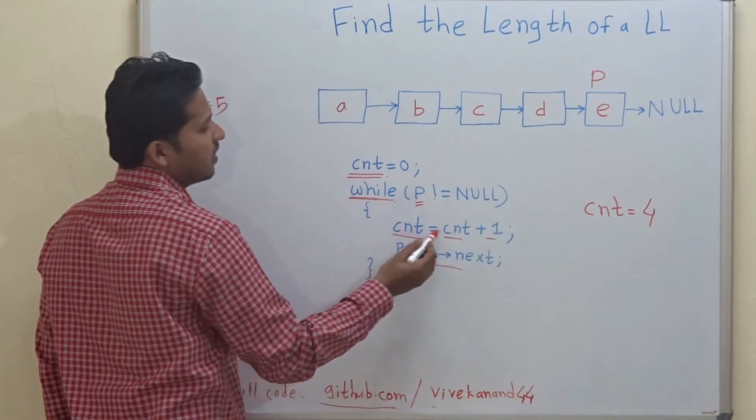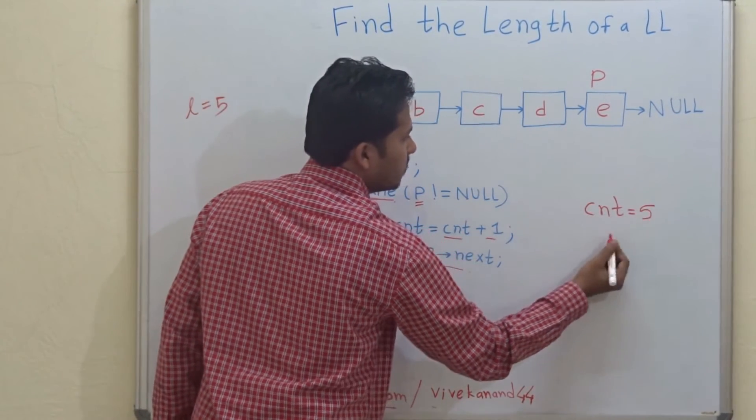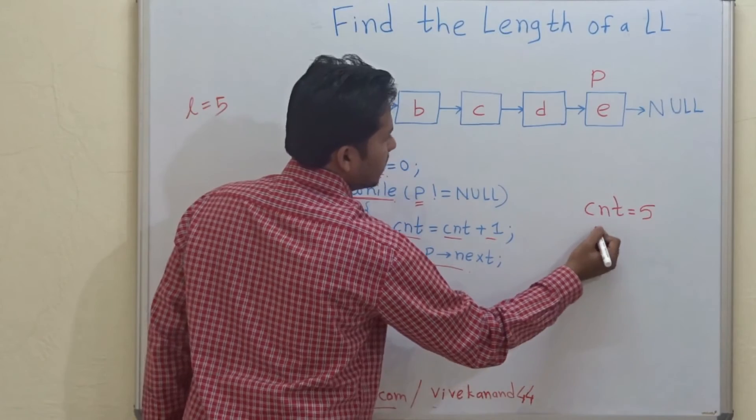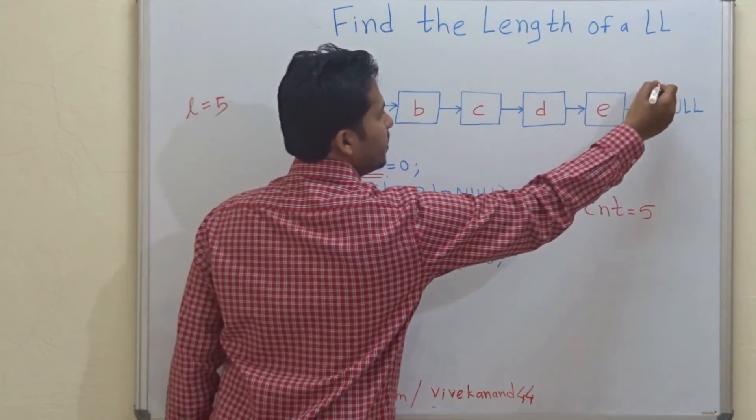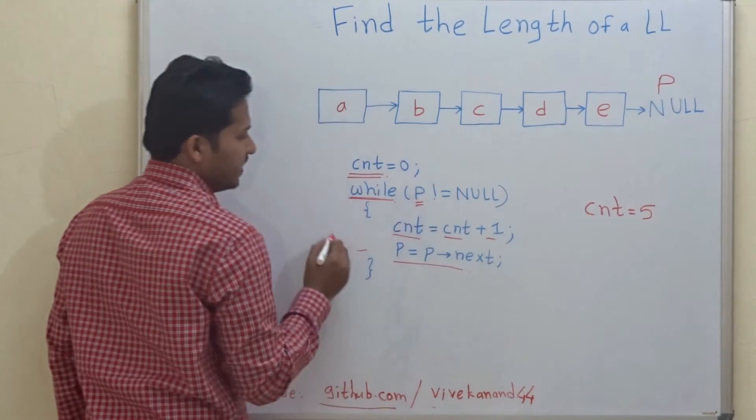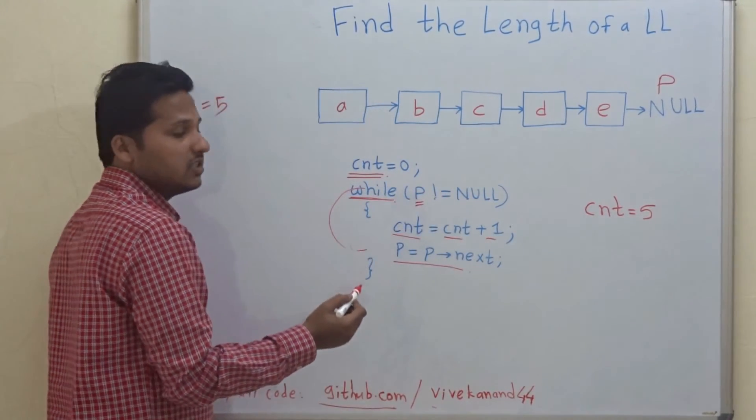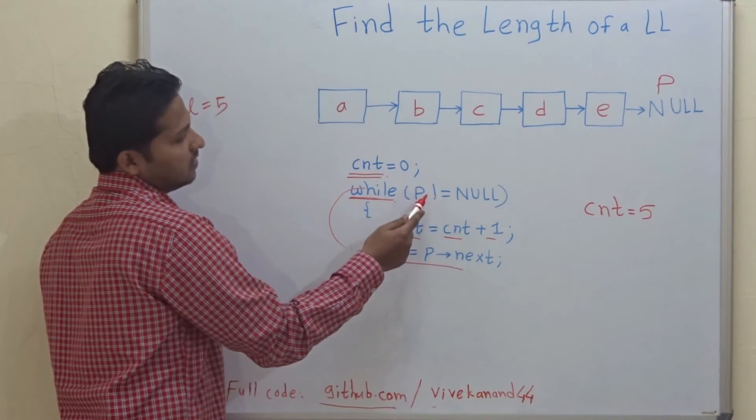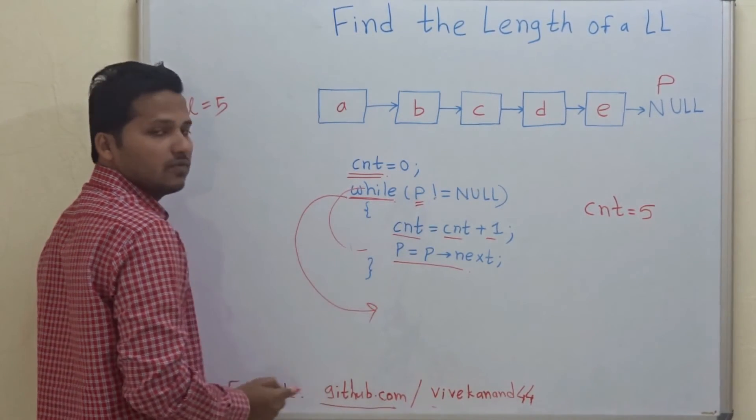Here again, counter will be incremented by one. It will become five, and p equals p.next. p will become null. Yes, in this iteration, p is equal to null. So this condition is false now. We will come out of this while loop.